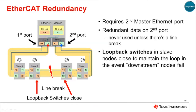By adding a second Ethernet port on the master, EtherCAT can provide cable redundancy. This example shows redundant data being transmitted on the second Ethernet port — an exact copy of that being transmitted on the first master port — but the second port's data is never used by the slaves unless a line break is detected. If a line failure does occur, in this case just after slave number 2, then the associated loopback switches, circled here, will close, thereby completing separate loops and allowing the master to detect the failure while maintaining full communications to all nodes.